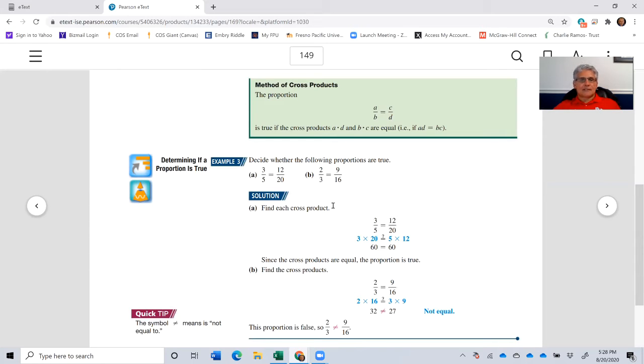2 thirds to 9 sixteenths, let's check it out. 2 times 16 is going to be 32. 3 times 9 is 27. So 32 is not equal, there's a line across that equal sign, it's not equal to 27. Therefore, this proportion is not true.